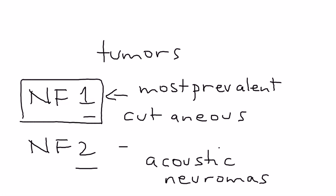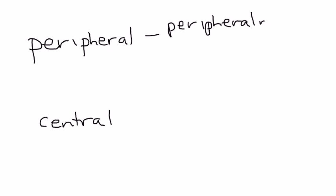The tumors are broken up into two categories: peripheral tumors and central tumors. Peripheral tumors involve the peripheral nerves, also known as neurofibromatosis. Peripheral nerves are any nerves outside of the brain or spinal cord.